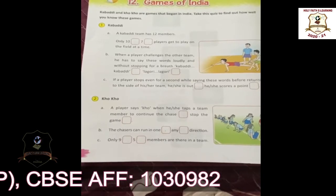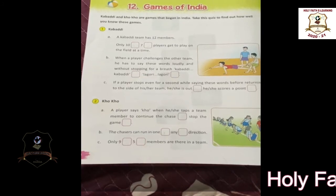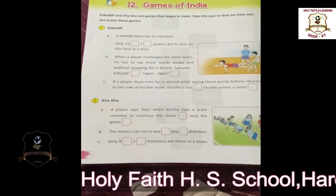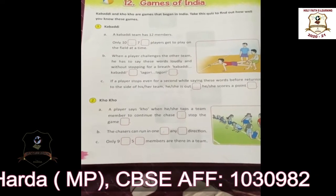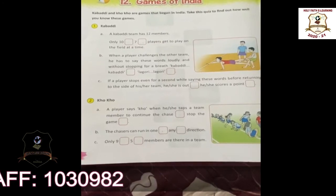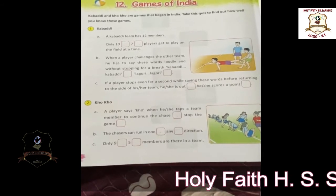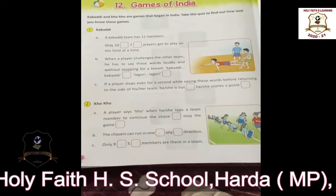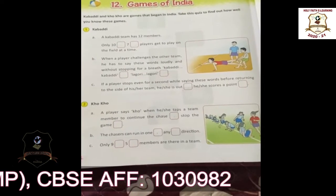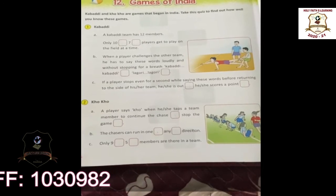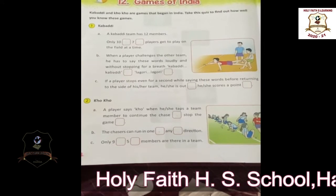There are 12 players in a team, but only 7 players play on the ground. And when a player challenges the other team, he has to say Kabaddi, Kabaddi loudly and without stopping. And if he stops even for a second before returning to the side of his team, then he is considered to be out.